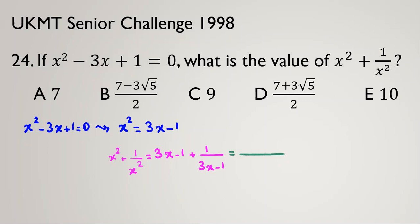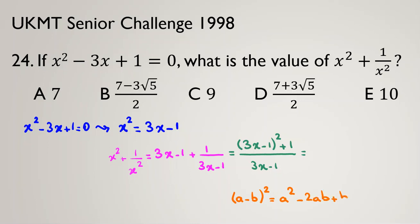Using a common denominator, this becomes (3x minus 1) squared plus 1, all over (3x minus 1). Now I expand (3x minus 1) squared using the identity (a minus b) squared equals a squared minus 2ab plus b squared, giving 9x squared minus 6x plus 1 plus 1, all over (3x minus 1).